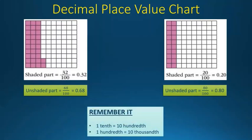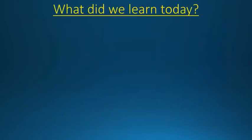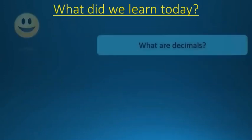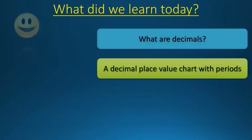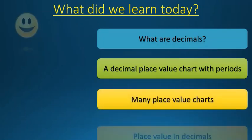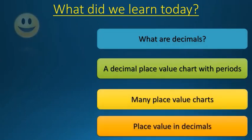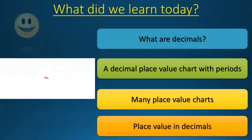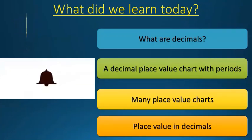One important thing to remember: 1 tenth is equal to 10 hundredths, and 1 hundredth is equal to 10 thousandths. So what did we learn? We learned what are decimals, we learned a decimal place value chart, we learned about many place value charts, and we learned about place value in decimals. If you like the video, please like, share, subscribe, and hit the notification bell. Thank you and have a nice day.